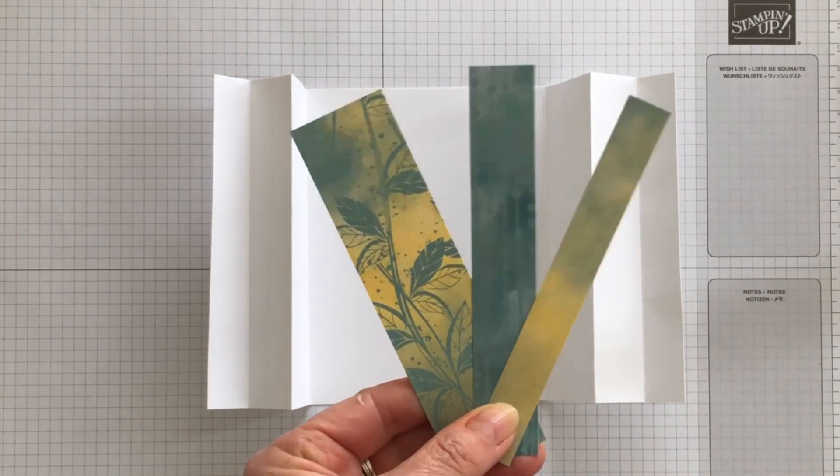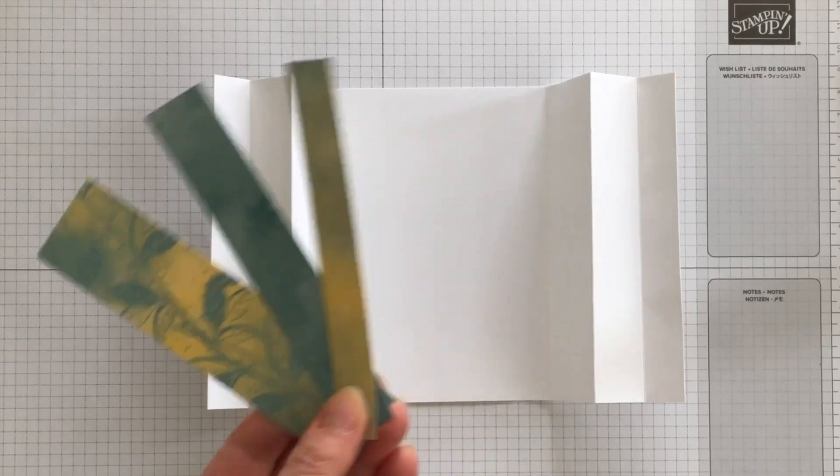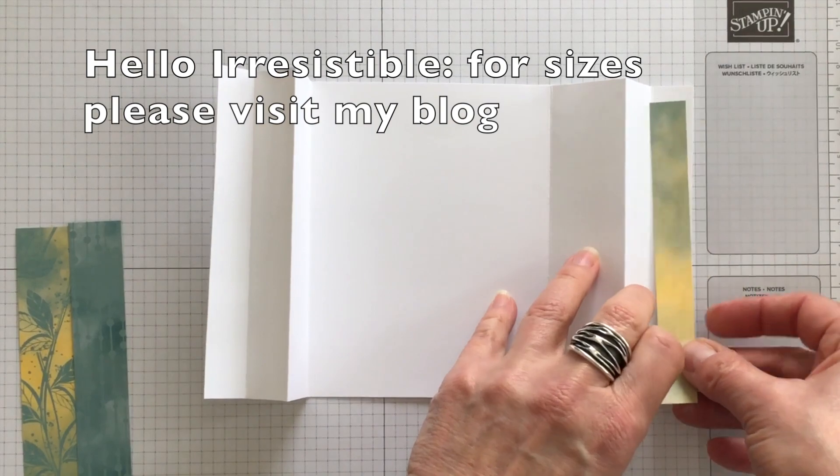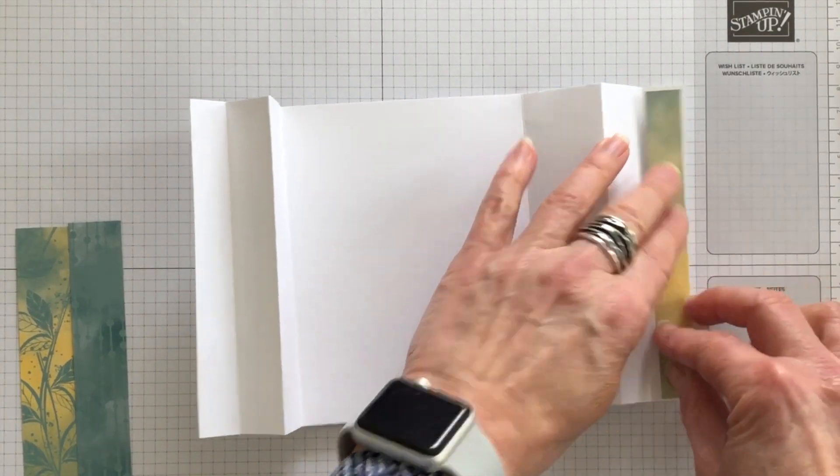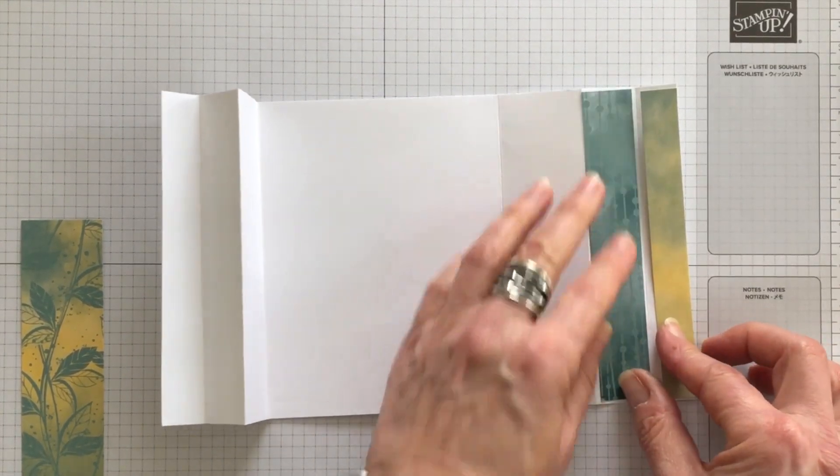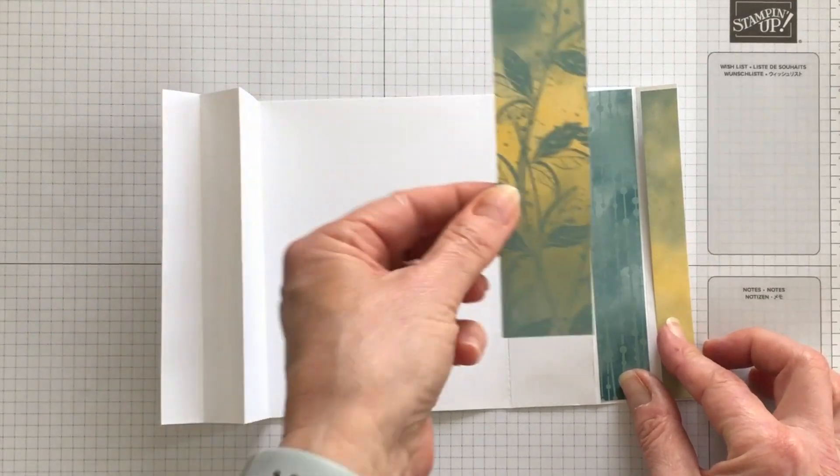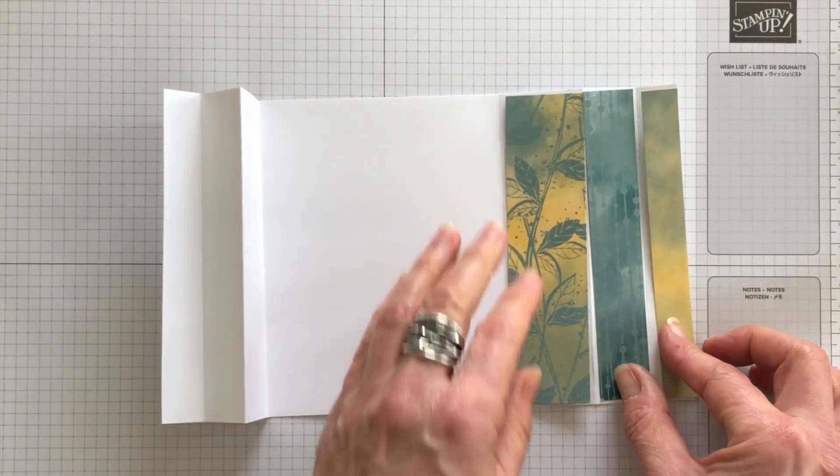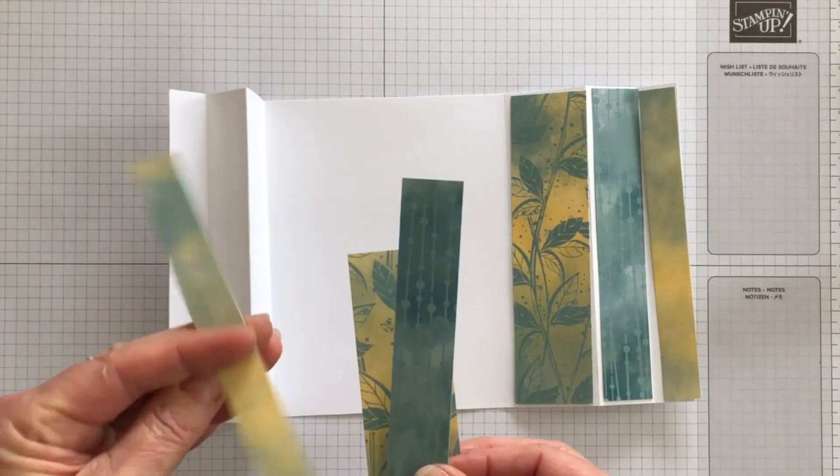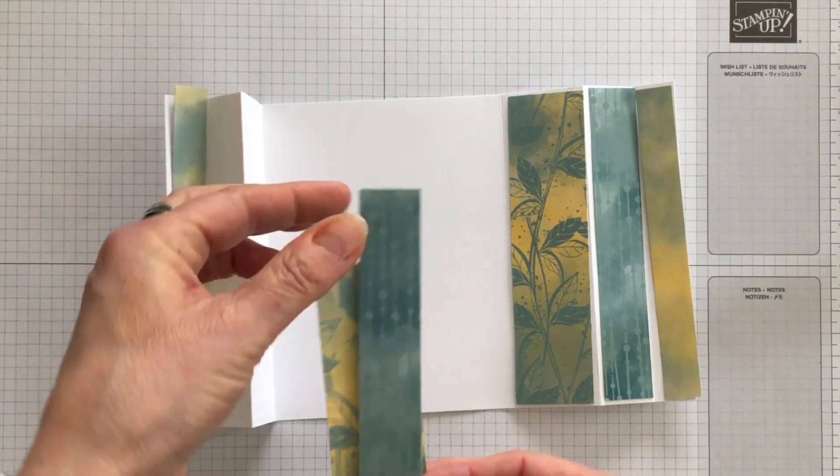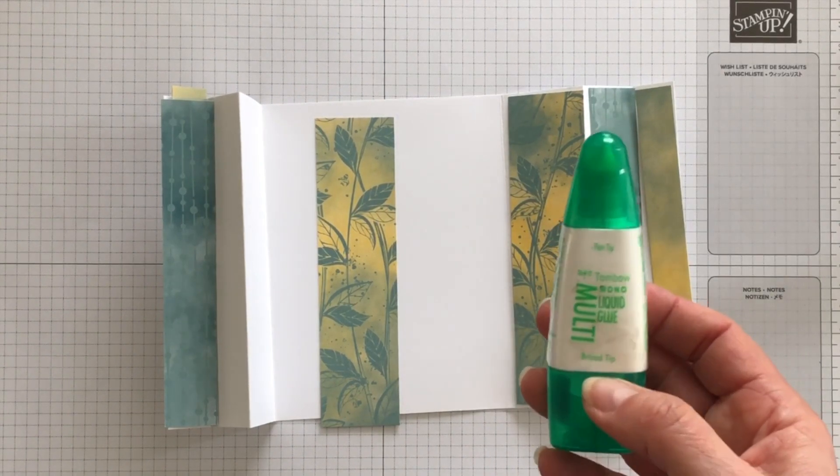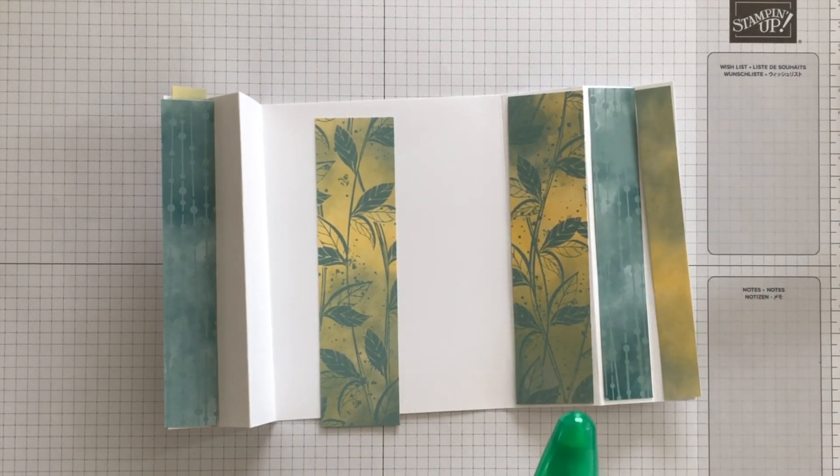I have chosen these three designs that I'm going to use on both sides of my fun fold. So I'm going to start off by adhering this planer one there. And then I'm going to adhere this one with the lines and the little circles in it second. And then I've got this pattern that I'm going to do third. And I'm going to do exactly the same on the other side. I've got this pattern, this pattern, and this pattern. So I'm going to adhere all of these down using my multi-purpose liquid glue.